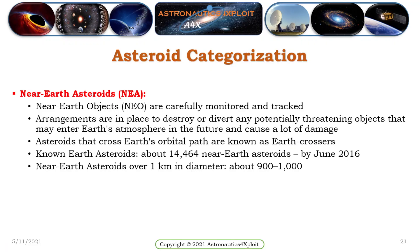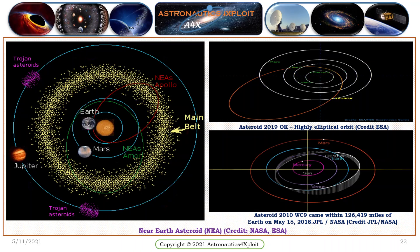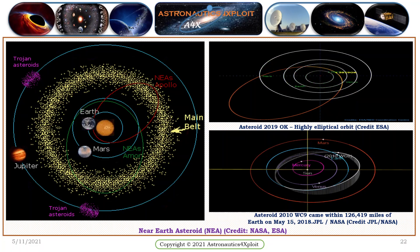Near-Earth objects are carefully monitored and tracked. Plans are in place to destroy or deflect any potential threat objects that may enter Earth's atmosphere in the future and cause damage. Asteroids that cross Earth's orbital path are referred to as Earth-crossers. There are about 14,464 known near-Earth asteroids. Near-Earth asteroids over 1 kilometer in diameter number between 100 and 1,000. Notable examples include Asteroid 2019 OK with a highly elliptical orbit, and Asteroid 2010 WC9, which came within 126,490 miles of Earth on May 15, 2018.